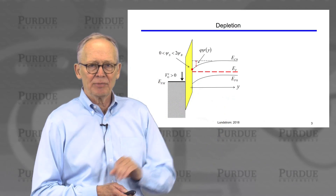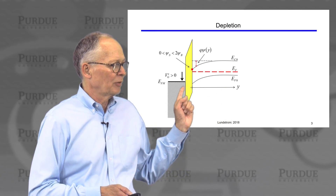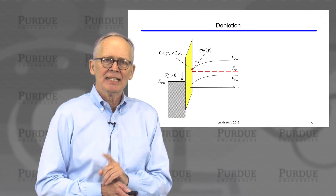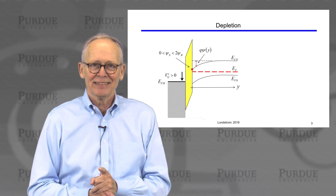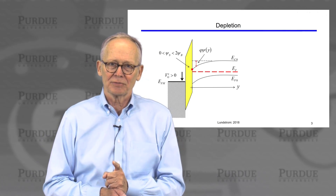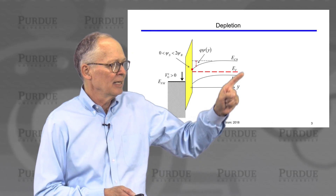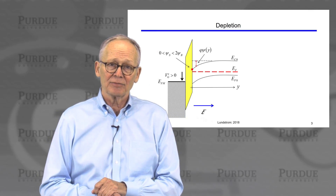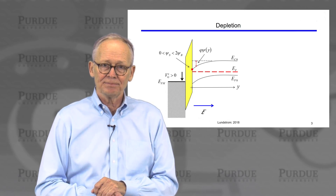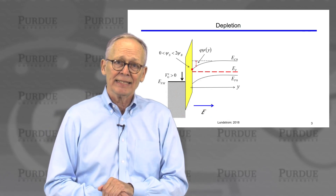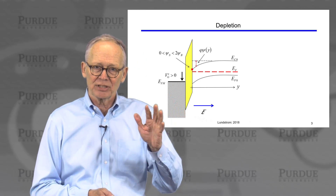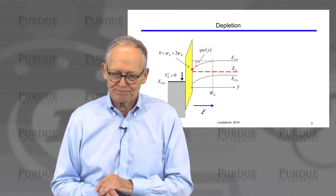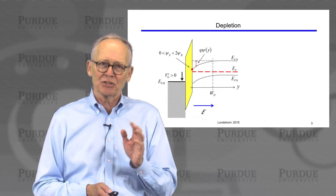Let's look at the energy band diagram in the depletion region. We will be in depletion when we've applied a positive voltage on the gate, but one that doesn't bend the bands too far. The critical surface potential for that band bending is 2 psi_B, which is determined by how the semiconductor bulk is doped. From the energy band diagram's slope, there's a positive electric field near the surface that pushes holes away, depleting the region near the surface of mobile carriers to approximately a depth W_D.